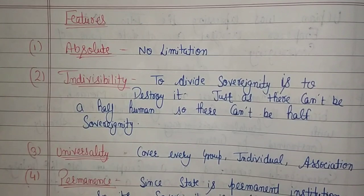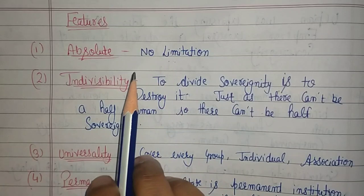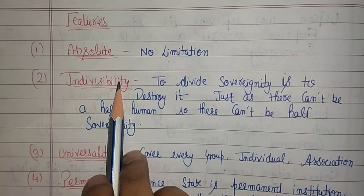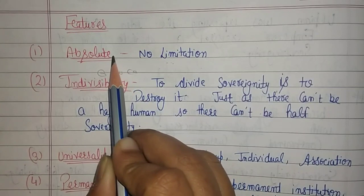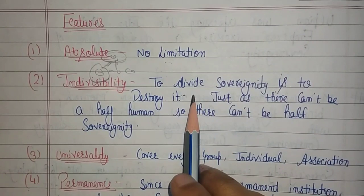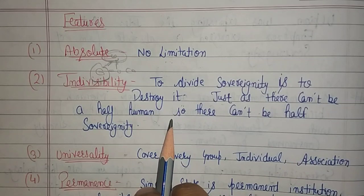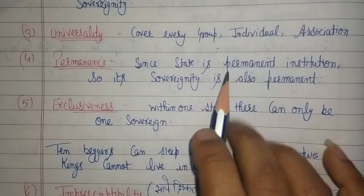पहला feature है absolute — किसी और का control नहीं, full control रहेगा, कोई limitation नहीं लगाई जाएगी। फिर आता है indivisibility — sovereignty कभी divide नहीं हो सकती। जब आप कह रहे हो कोई चीज supreme है, तो supremacy को divide करने का कोई logic नहीं। 'To divide sovereignty is to destroy it' — just as there can't be a half human, वैसे ही आधी sovereignty, sovereignty नहीं हो सकती। फिर है universality — everywhere और सब पे apply होती है। State permanent institution है, इसलिए sovereignty भी permanent देखने को मिलती है।